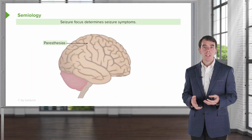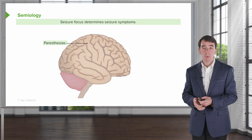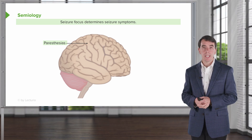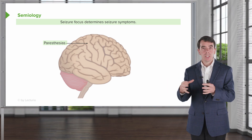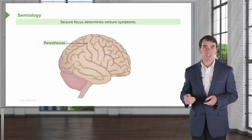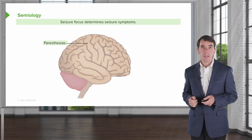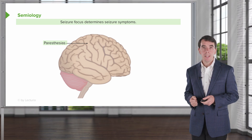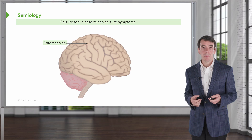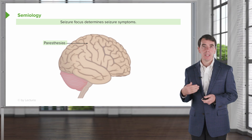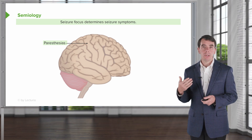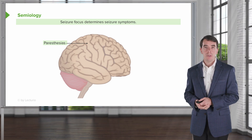We can use this information when evaluating patients. When talking to patients through our history, we're evaluating the seizure semiology — how the seizure begins, how it progresses, and how it ends. That semiology can tell us where the seizure is starting and can define some of those clinical zones. The seizure focus determines the seizure symptoms. Seizures that begin in the primary sensory cortex present with paresthesias — positive sensory findings like tingling or electric shock or electric discharges occurring in a region of the body.